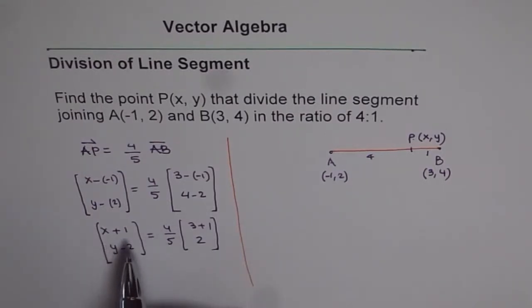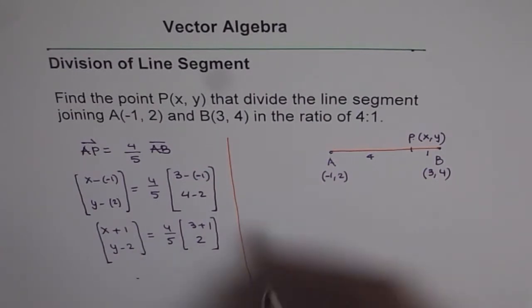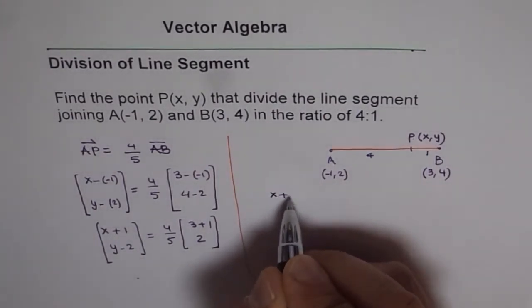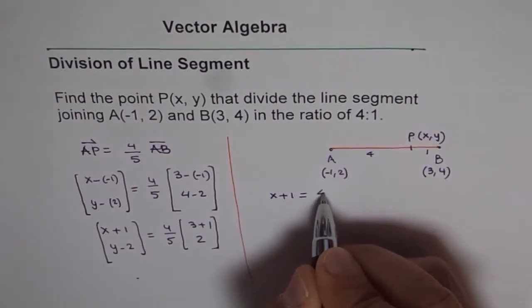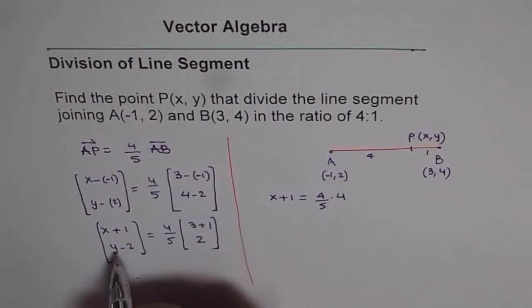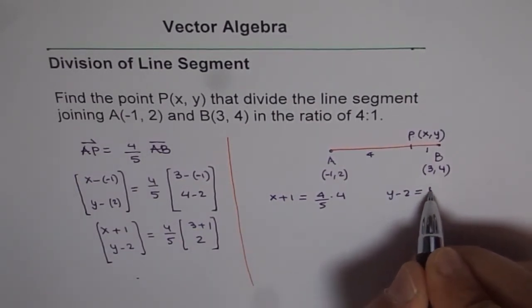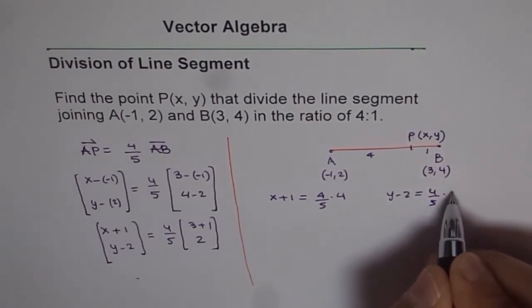Now it is easy. So what we have here is X plus 1 equals 4 fifth of 4 and Y minus 2 is 4 fifth of 2. So we can find both.